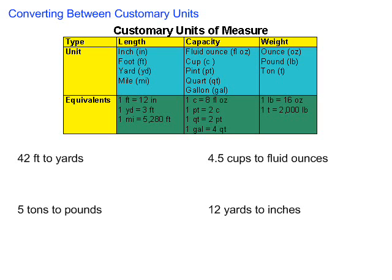Converting between customary units of measure. When we do converting between customary units, there's a few things we have to remember. We need to remember the conversions or equalities given in this table: one foot is 12 inches, one yard is 3 feet, one mile is 5,280 feet.